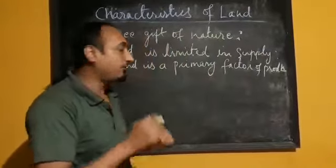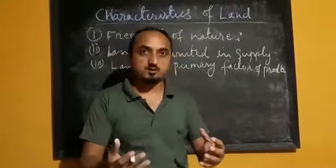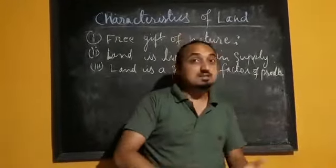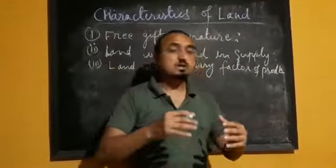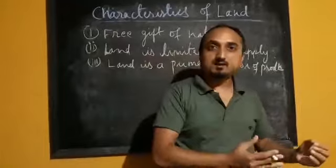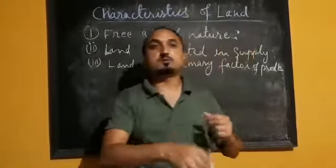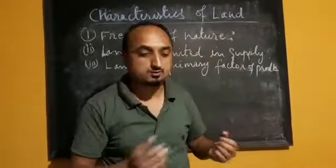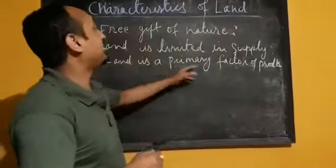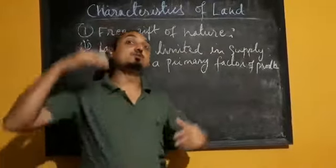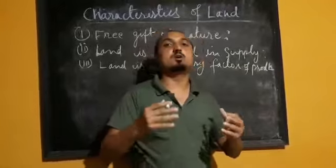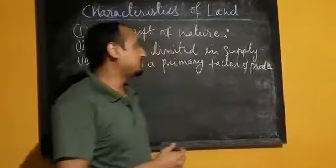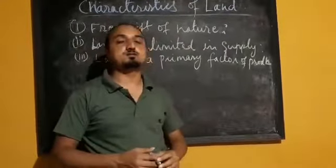For example, in order to construct an industry or factory, land is needed. Land is needed to construct that factory. Similarly, if you want to use that land for agricultural purposes or for the production of food grains, without land it is not possible to produce any food grains. That's why it is called the primary factor of production — we have to make use of this land in order to produce any items.